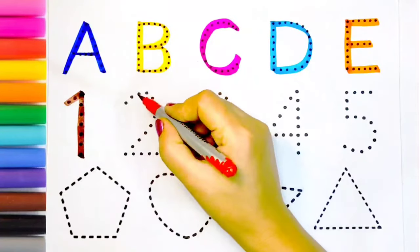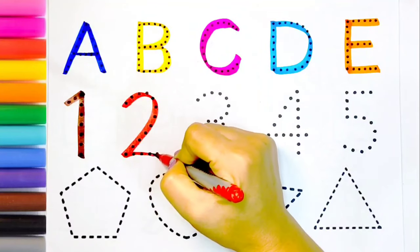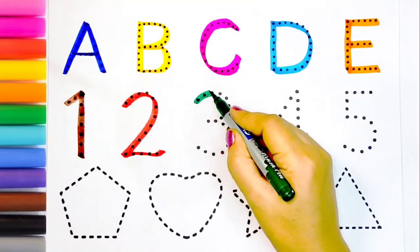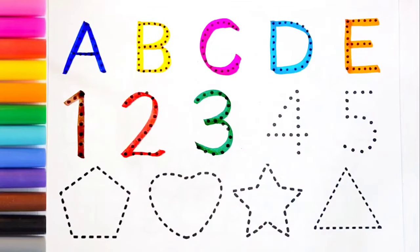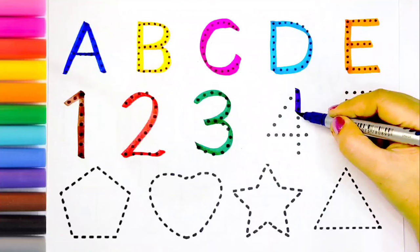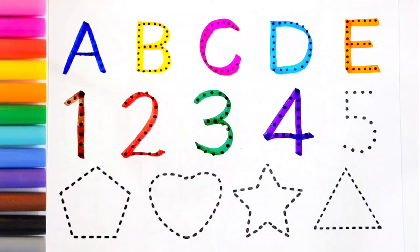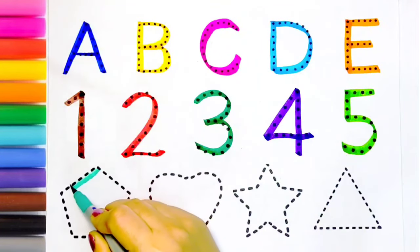Number one, red color. Number two, dark green color. Number three, purple color. Number four, light green color. Number five, sea green color. Pentagon shape.